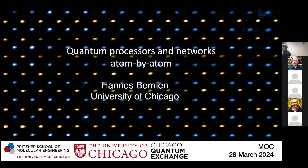We have these arrays of atoms, and what's special in our case is that we have arrays consisting of two types of atoms: rubidium and cesium. We'd like to use optical tweezers to scale these systems to many atoms, and use them in a quantum information or quantum simulation context. We're also interested in connecting these arrays over long distances using optical fiber links — that's the network part, and the arrays are the quantum processor part of our research.